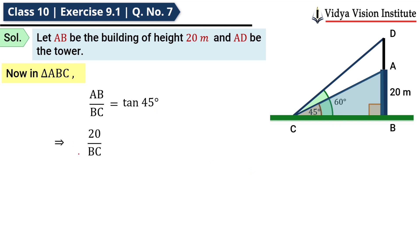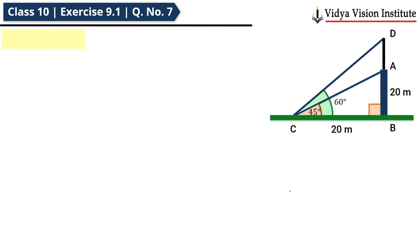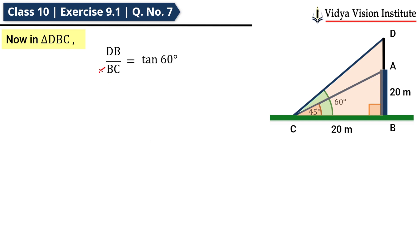तो 20 meter upon BC equals tan 45 degree, which is 1, therefore BC is equal to 20 meter। अब in triangle DBC, DB upon BC is equal to tan 60 degree। BC की value हमने calculate कर ली है — that is 20 meter — और tan 60 की value है root 3, therefore DB is equal to 20 root 3 meter।